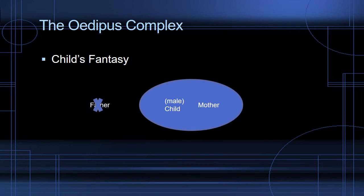The Oedipus complex happens in very early childhood, almost in infancy. It begins with the male child's fantasy that the child and the mother are one. The mother is the child's first object of desire because she provides love, affection, food, and cleaning. The child's fantasy is that they are one with the mother and the father is nowhere in the scene.